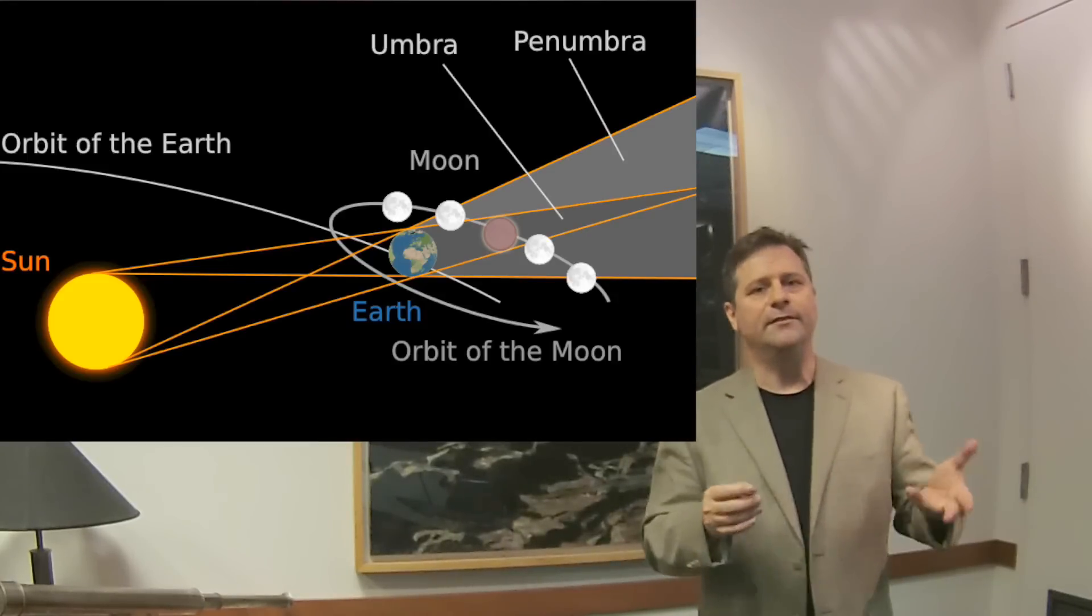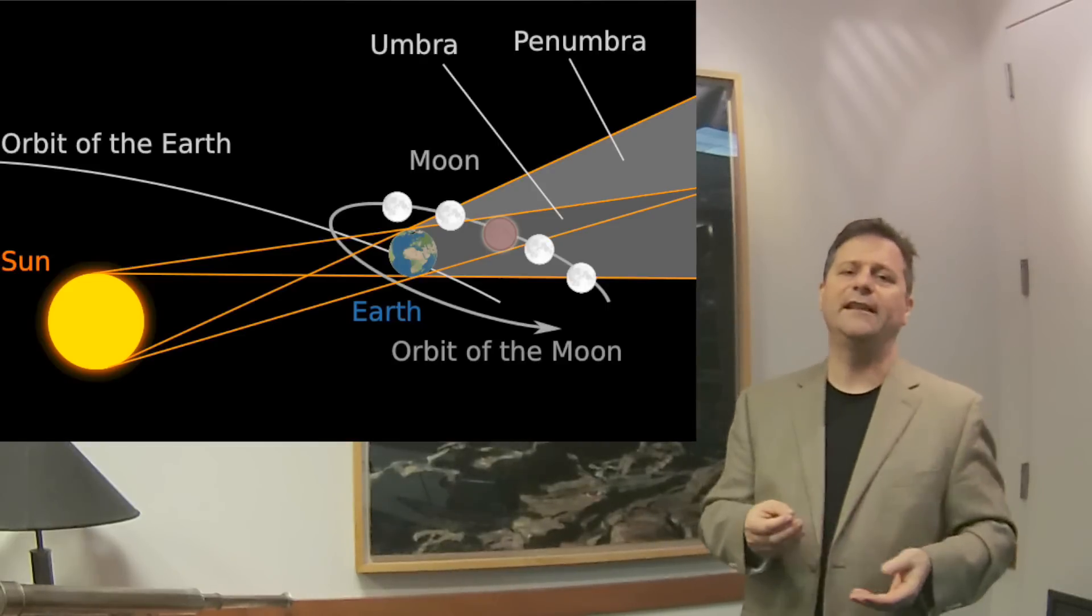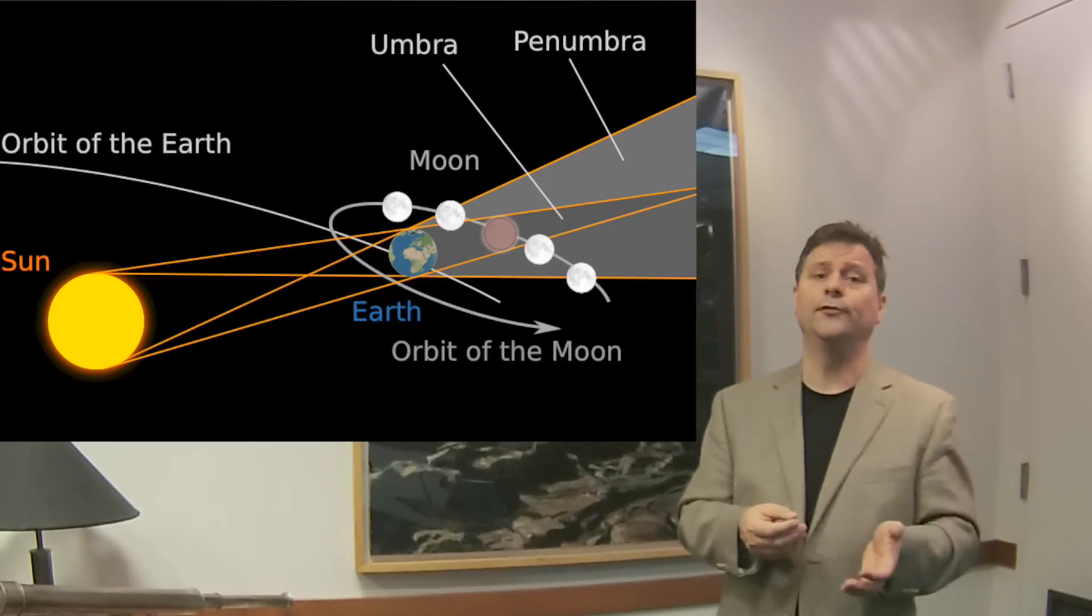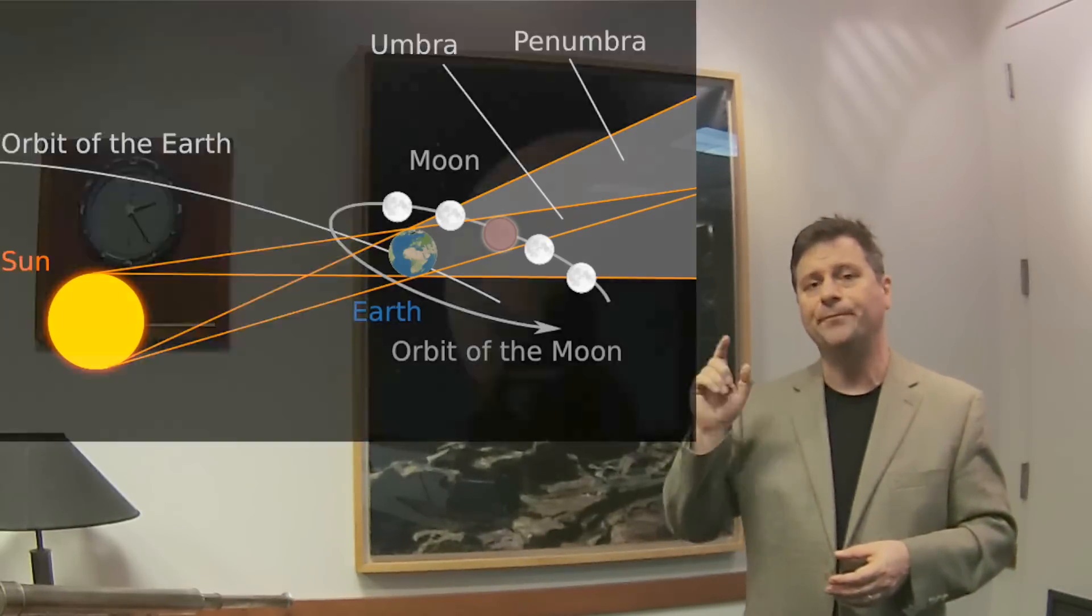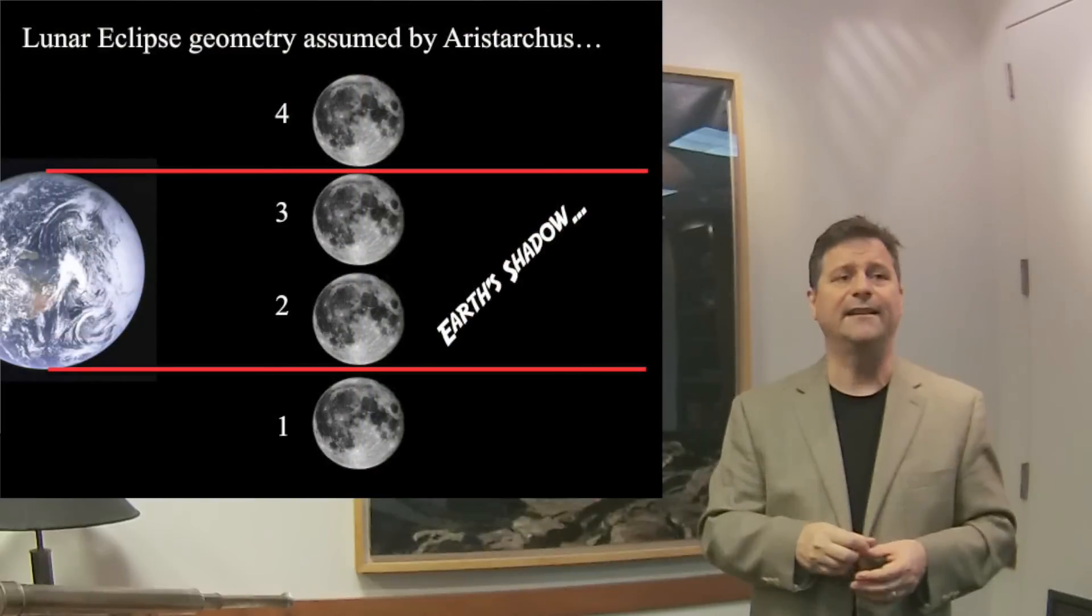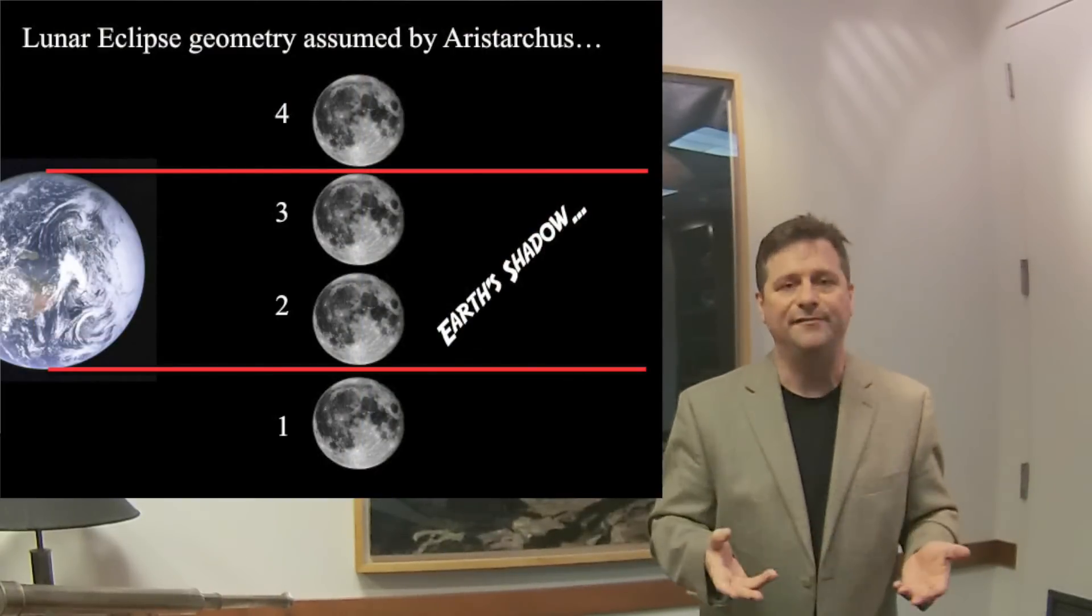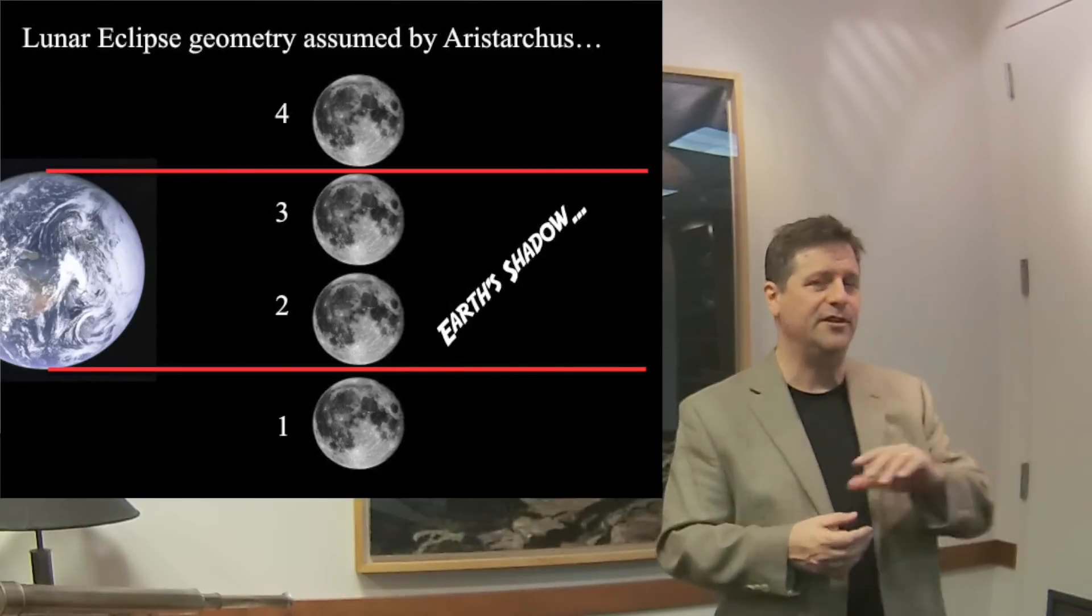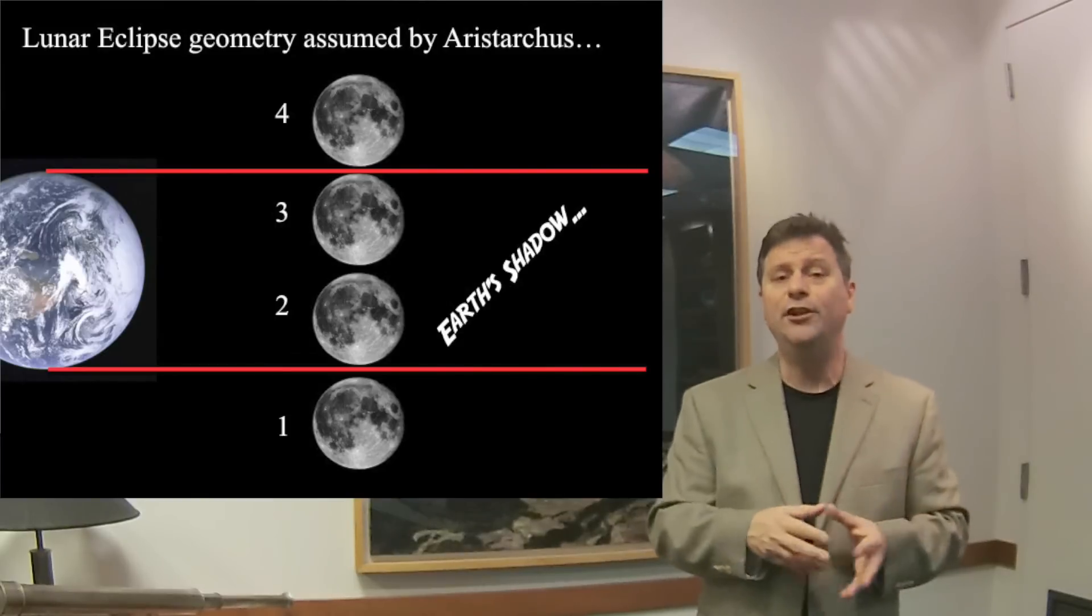And Aristarchus determined it was roughly about twice. So he thought that because the length of totality of the lunar eclipse was about twice that of the time it takes to go from first contact to second contact, he determined that roughly the moon is about half the size of the earth. Well, this assumes something. It assumes that the shadow of the earth is linear and goes out for a very long way and doesn't taper.